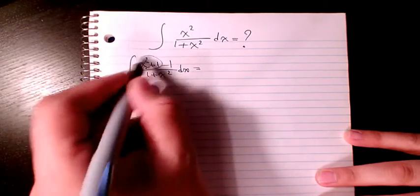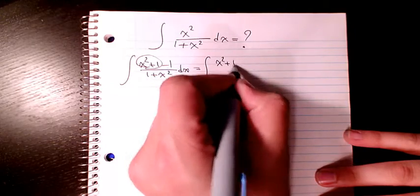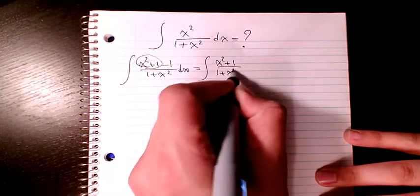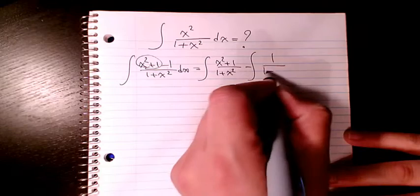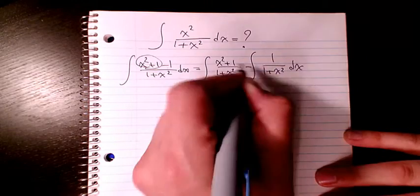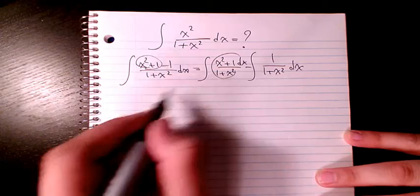And then I decompose it to two parts. It's going to be (x squared plus 1) divided by (1 plus x squared), minus 1 over (1 plus x squared) dx. And here we have another dx. These two cancel out.